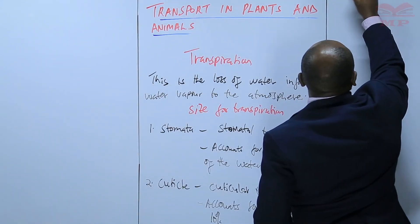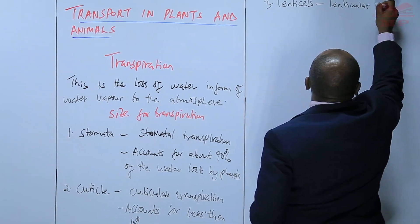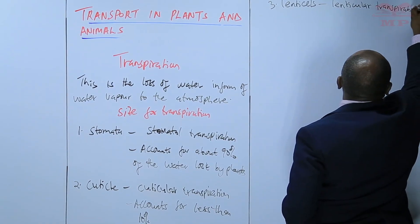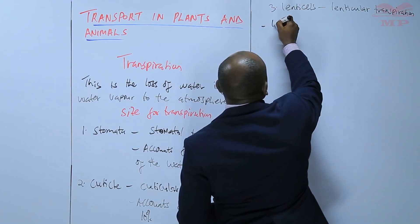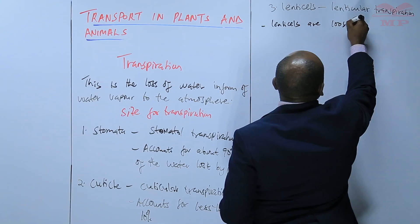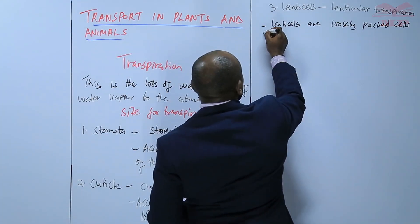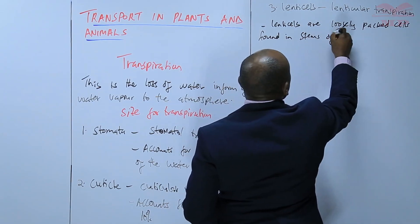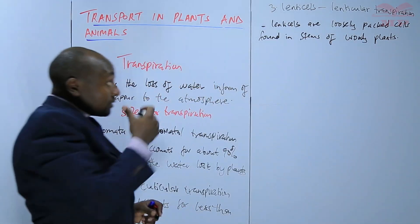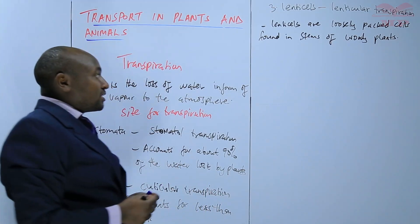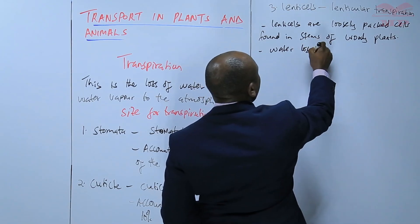Then we have through the lenticels, what we call lenticular transpiration. Lenticels are loosely packed cells — that means they leave a lot of spaces. They are loosely packed cells found in stems of woody plants. So some woody plants have cells on their stem that are loosely packed, and through those cells water can be lost. But the water loss here is very minimal.